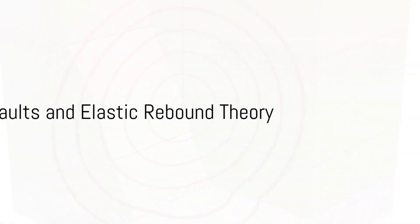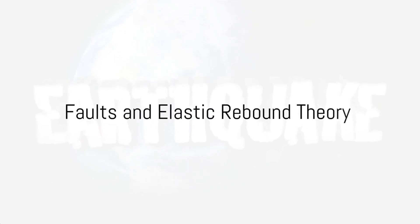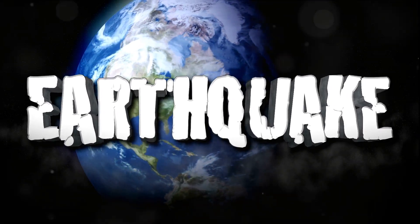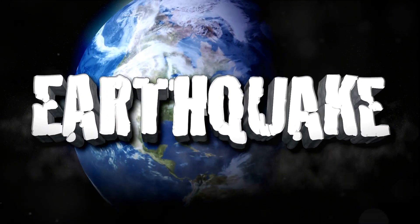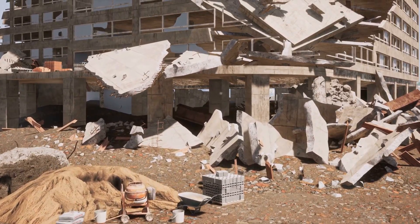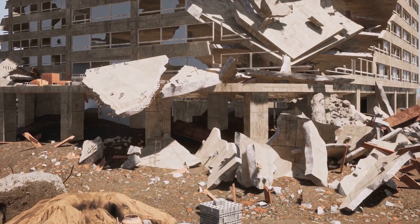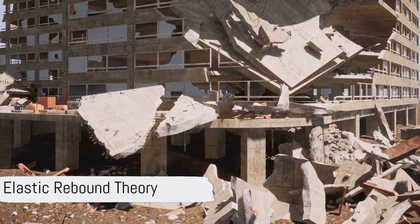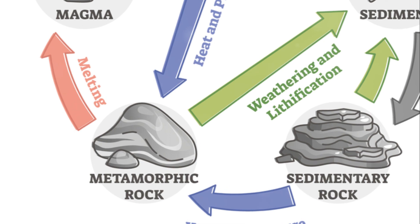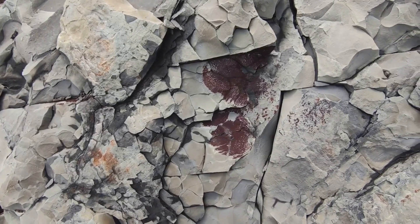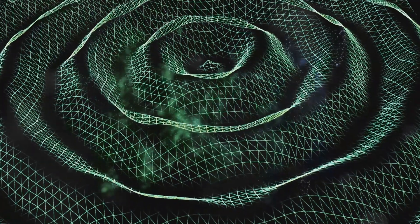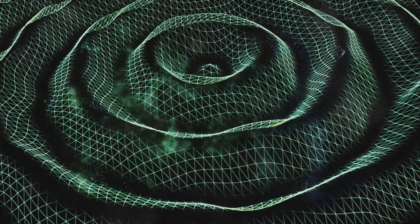Imagine cracks or fractures in the Earth's crust where movement has occurred — we call these faults. Earthquakes are often associated with the sudden release of stress along these faults. This brings us to the elastic rebound theory: rocks on either side of a fault are under stress and deform elastically. When the stress exceeds the strength of the rocks, they suddenly break, and stored elastic energy is released, causing an earthquake.